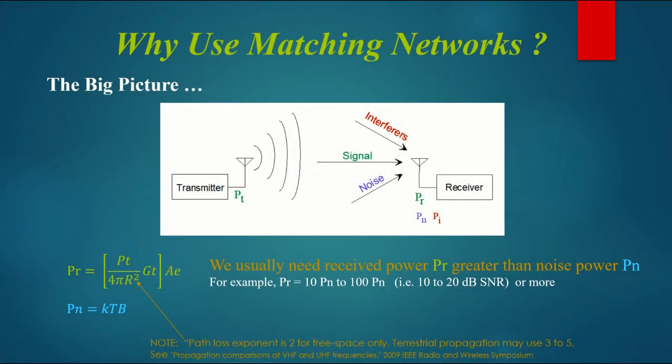So why are matching networks important? This is the big picture. We have a transmitter putting out power PT into an antenna. That power may spread out evenly in all directions, growing as a sphere. Over at the receiver side, the signal comes in and competes with interferers, which we can get rid of with filters, but it also competes with noise.